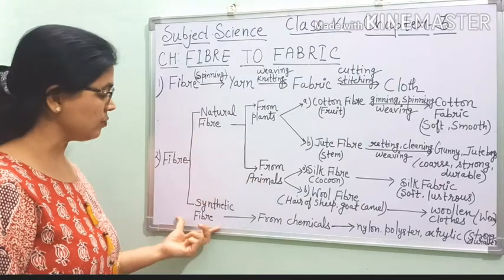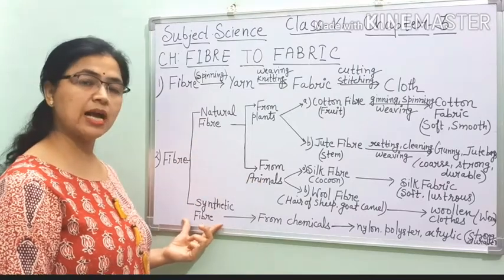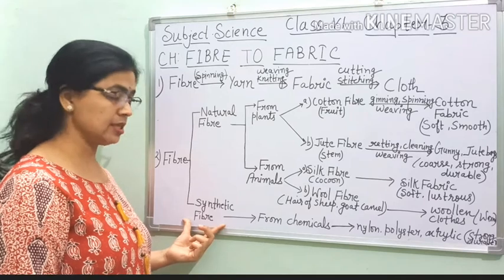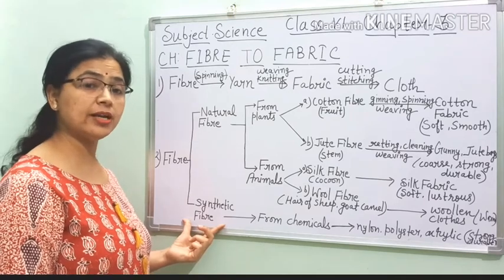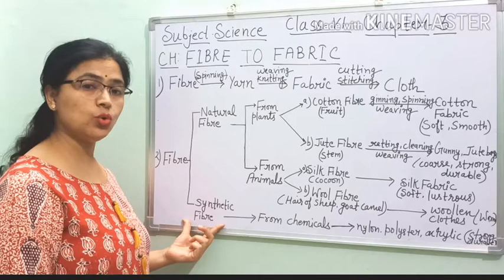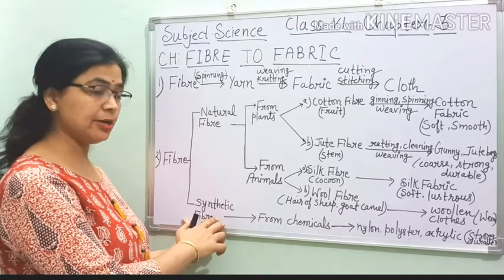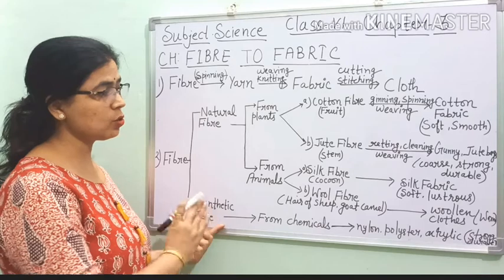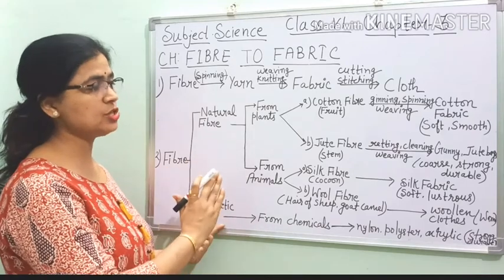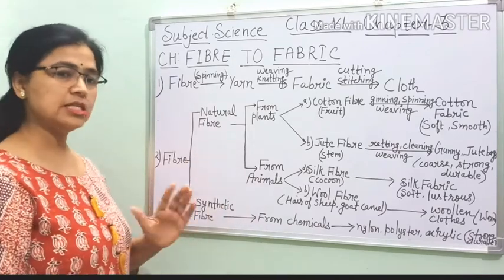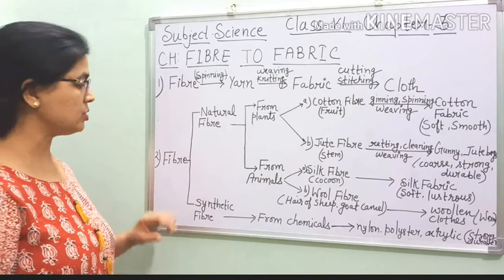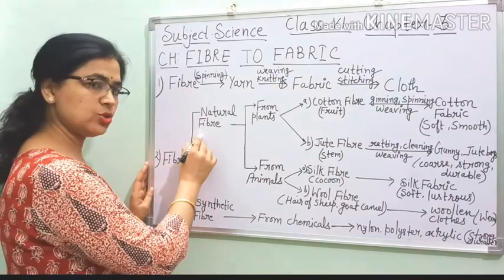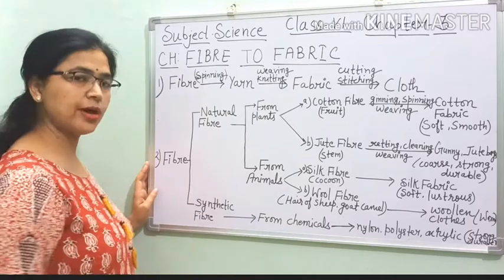The second one is synthetic fibre. As the name suggests, this is synthetic — it means we get it chemically. There is no role of animals and plants to prepare synthetic fibre. Fibre is of two types: natural fibre and synthetic fibre.